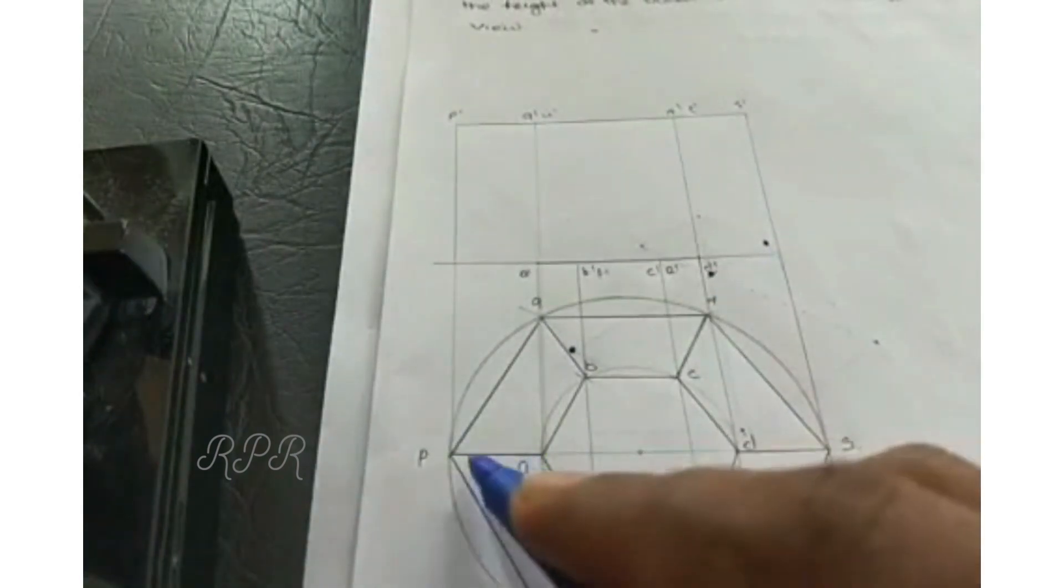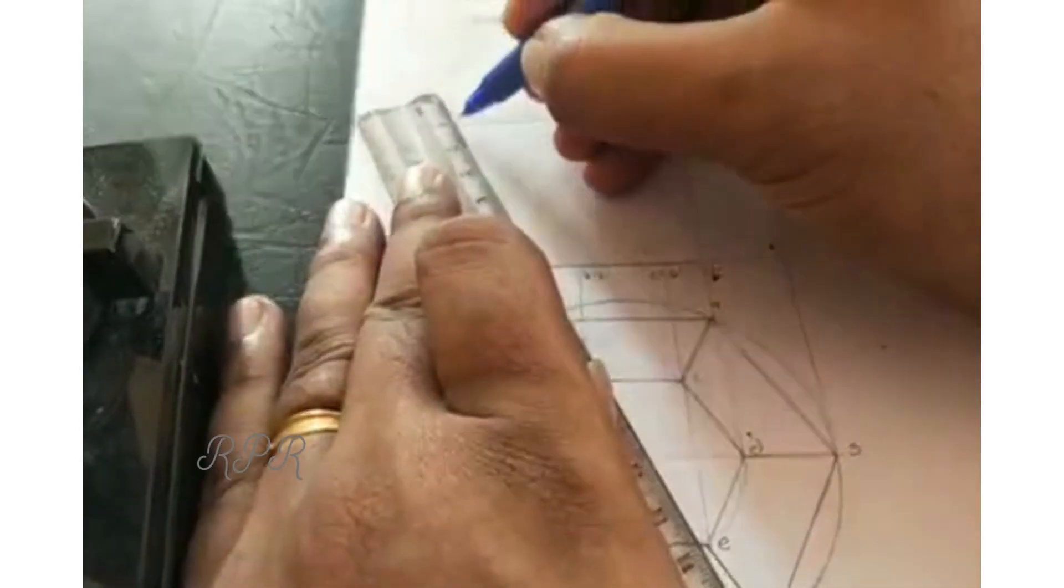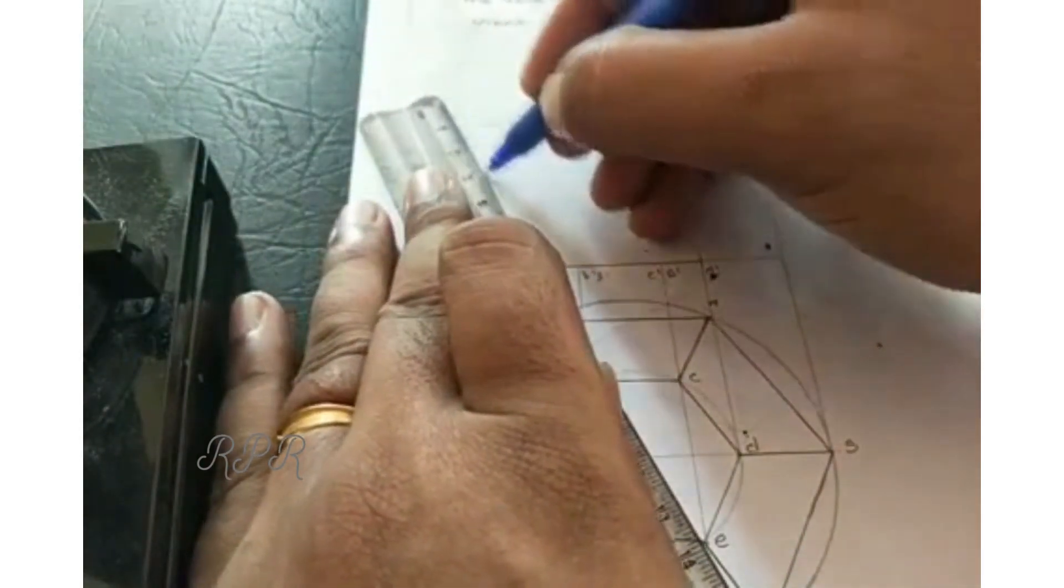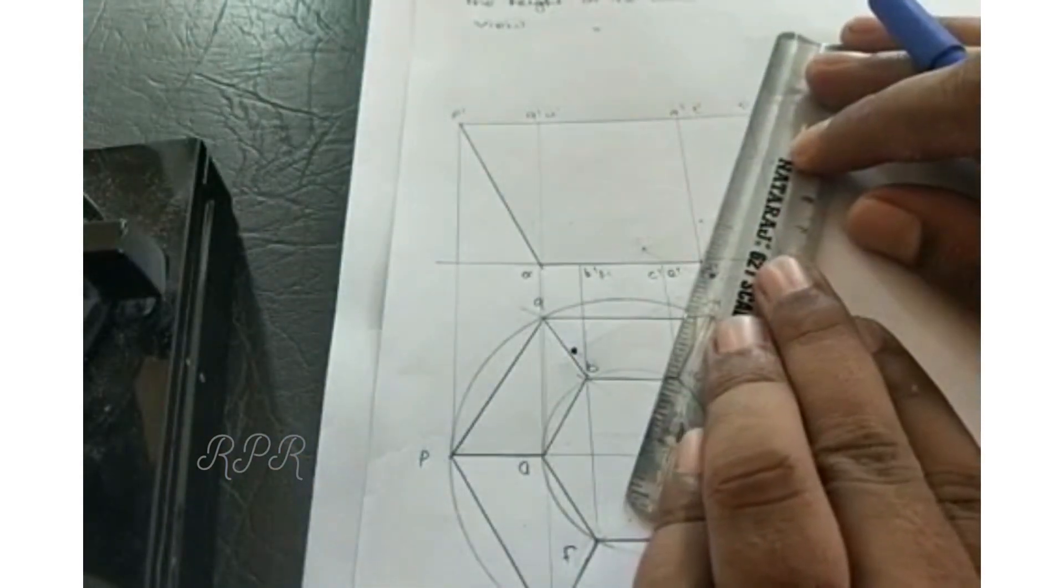Then connect P-A in front view. F-dash, D-dash.